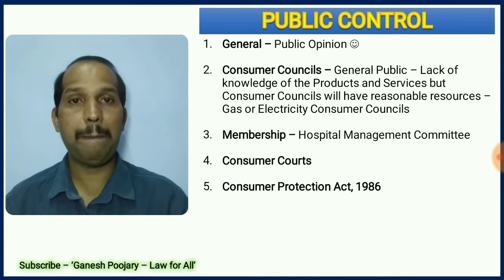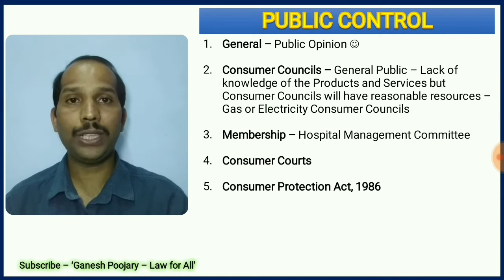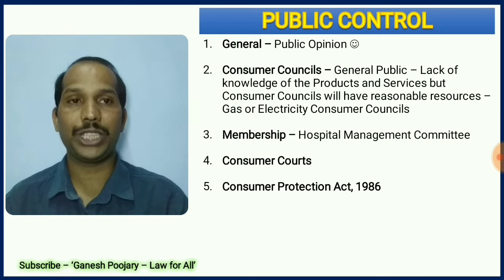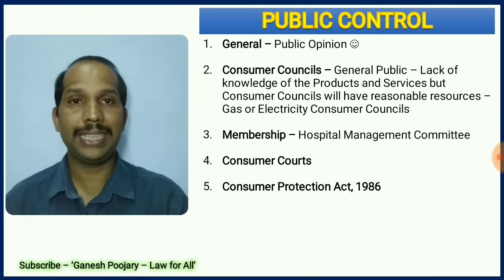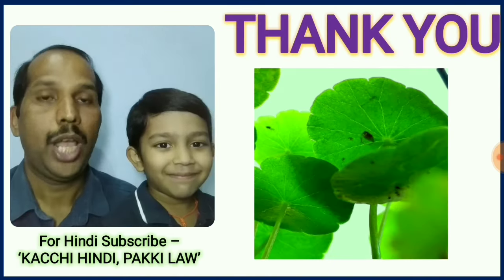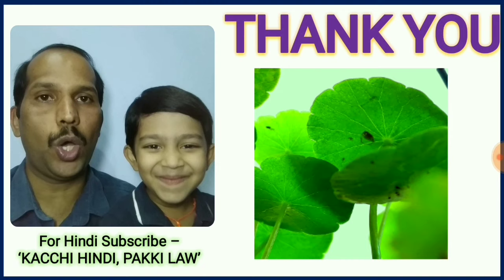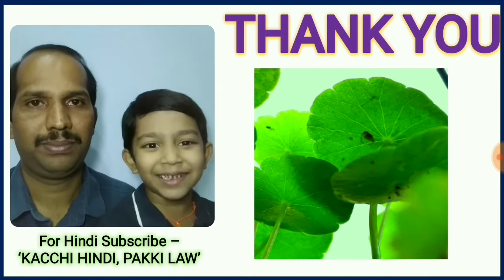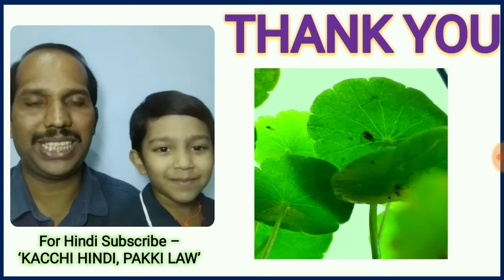The third way is by being members of certain committees, such as a hospital management committee — by being members, the public can control public corporations. The fourth and fifth ways are very legal and highly discussed topics these days: consumer codes under the Consumer Protection Act, 1986. These are the five important controls available with the public against public corporations.